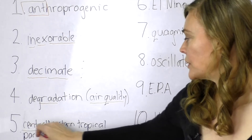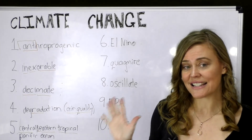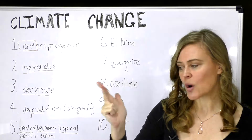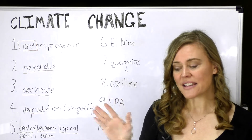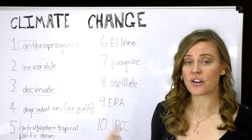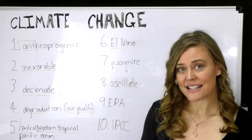Number five: central, eastern, tropical Pacific Ocean. The keyword for number five is 'glove,' and I love number five because you can fit lots of words into it. The five parts of the glove represent: central, eastern, tropical, Pacific, Ocean. For Australia, it's on the left — the central, then the eastern is to the left — tropical is up high to the north, and the Pacific Ocean is off the east coast up north. When the surface temperature of the CESTPO increases, that is the El Niño effect.